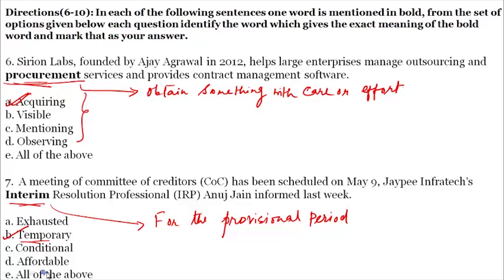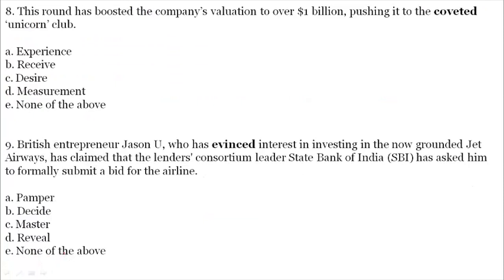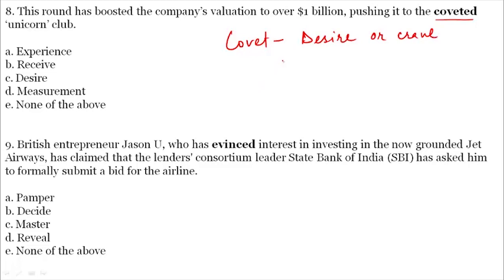Question number 8. 'This round has boosted the company's valuation to over $1 billion, pushing it to the coveted unicorn club.' The bold word is 'coveted.' Coveted means to desire or crave for something. So 'desire' is the synonymous word of coveted, and our answer will be C.